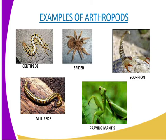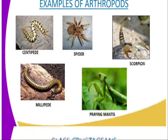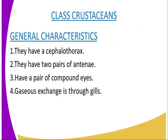The division into these classes is based on some characteristics such as the number of limbs present and the number of body parts. We are now going to look at the class crustaceans, which is under the phylum arthropoda. Examples include the shrimp, the crab, the lobster, and the starfish.